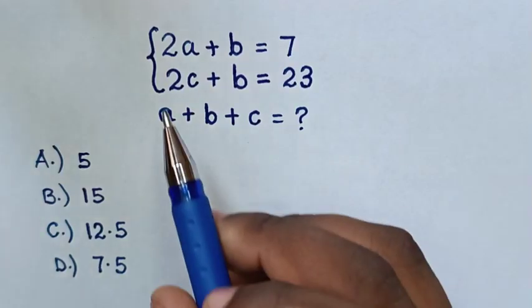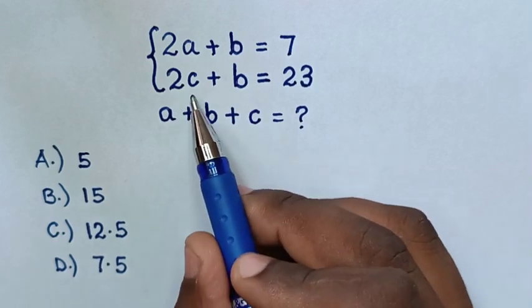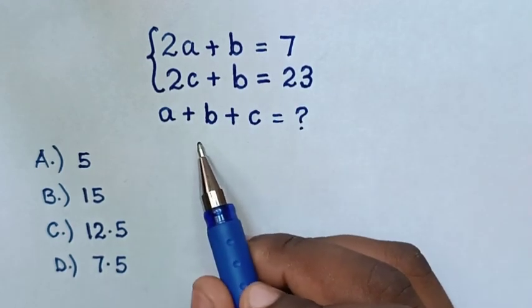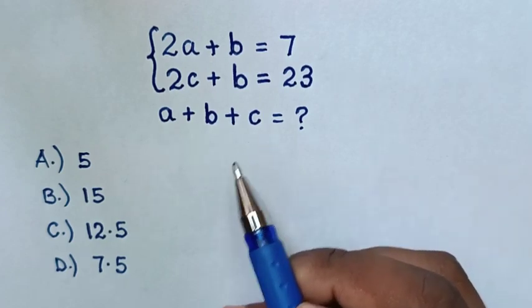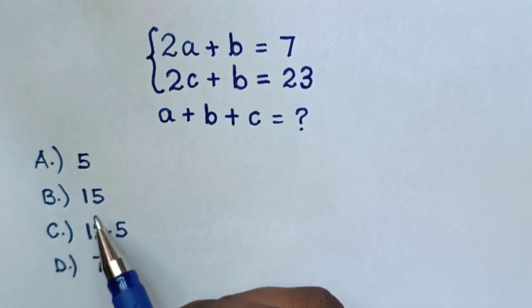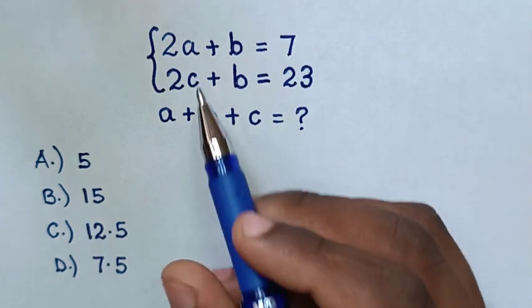Hello, how to solve 2A plus B equals 7, 2C plus B equals 23, to find the value of A plus B plus C, by selecting answers: A is 5, B is 15, C is 12.5, D is 7.5.